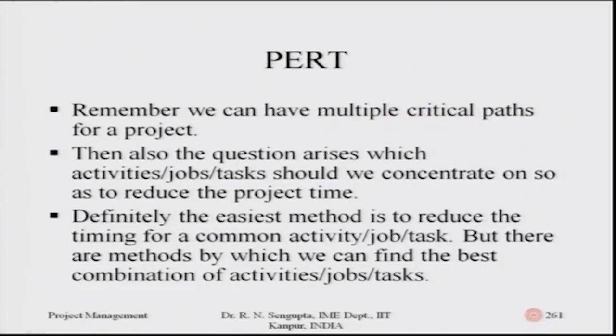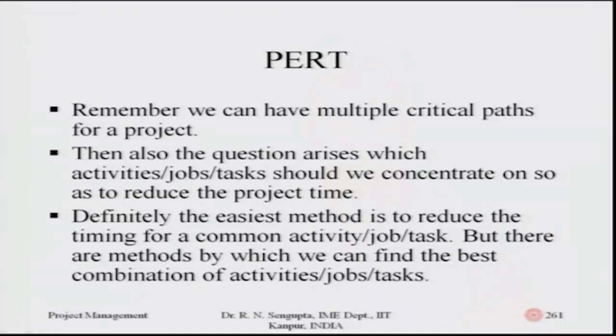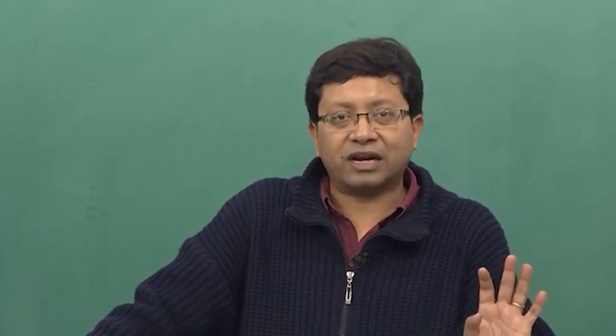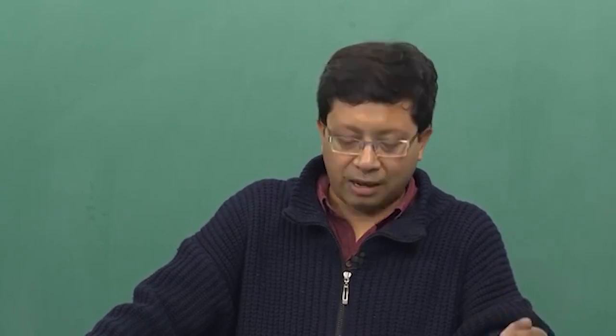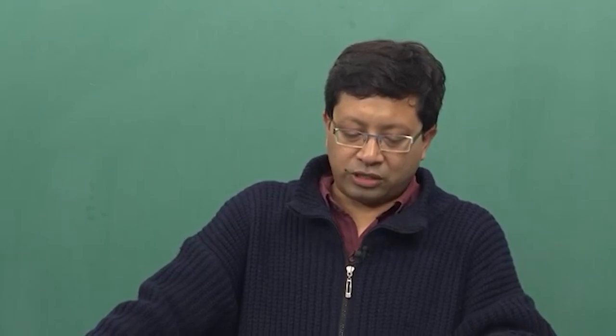There can be multiple critical paths, which means many activities are very important. Any crashing or over-estimation of time for any of these activities has huge consequences for both time and scheduling. The question then arises: if there are many critical paths, which activities should we concentrate on to reduce overall cost to the maximum possible extent?